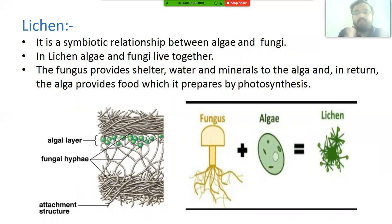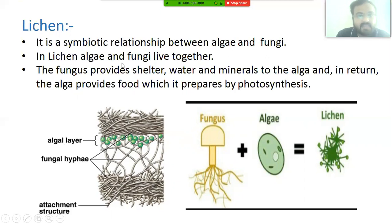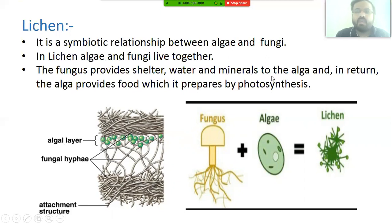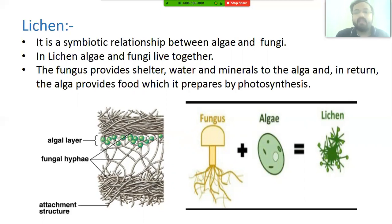Lichen is also a symbiotic relationship — between an alga and a fungus. Algae and fungi live together in close association. The fungus provides shelter, water, and minerals to the alga, and in return the alga provides food which it prepares by photosynthesis. So the fungus gets food from the alga, and the alga gets shelter, water, and minerals from the fungus.